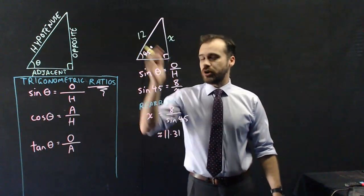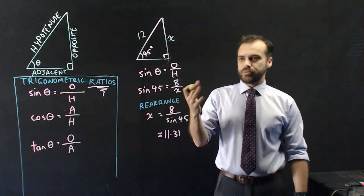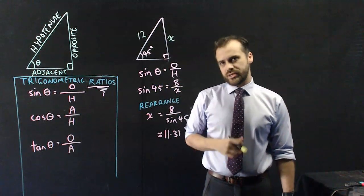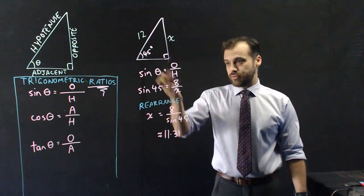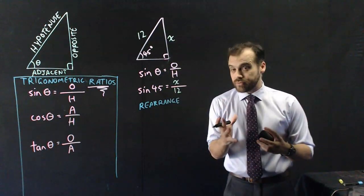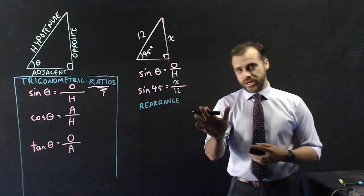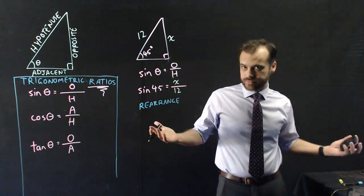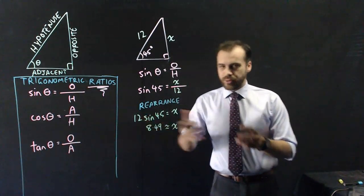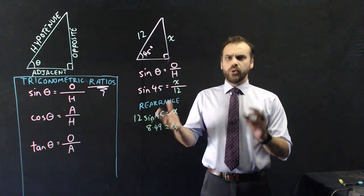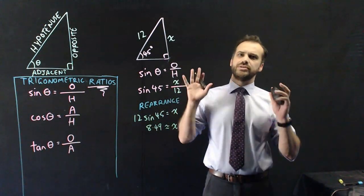What if the triangle looked a little bit different? What if this time I knew the hypotenuse but I didn't know the opposite? I just put in the things that I now know instead of what I used to know. And once I've done that, I need to rearrange, this time by multiplying both sides by 12. X is about 8.49 and it works.